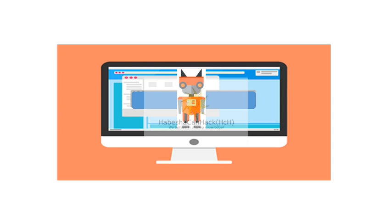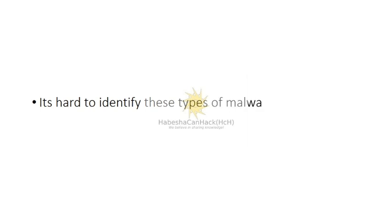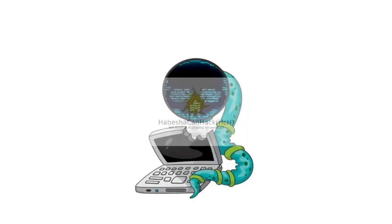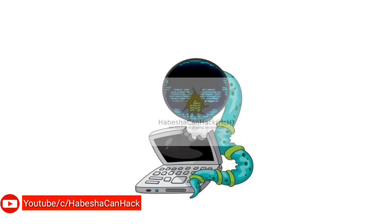The malware types include: bot master, computer malware categories. Among the malware types, we have virus, worm, trojan horse, and bot. A virus attaches to a host file, while a worm can replicate independently without a host file.